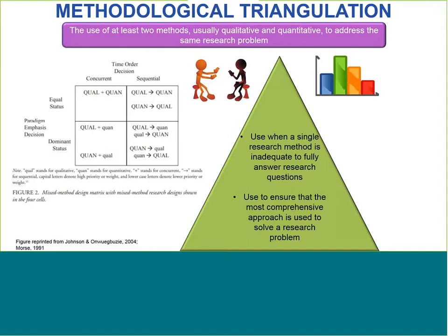Methodological triangulation is the use of at least two methods, usually qualitative and quantitative, to address the same research question. You want to use two methods to address your research problem when a single research method is inadequate to fully answer your research questions, or to ensure that the most comprehensive approach is used to solve a research problem. It's important to note that in mixed methods research, qualitative and quantitative data are sometimes given equal priority, and at other times one method may be given higher priority, or a dominant status, over the other. The choice of your methodological emphasis should be based on your research question first and foremost, and which methods allow you to appropriately and comprehensively gain the most insight to address your research problem.